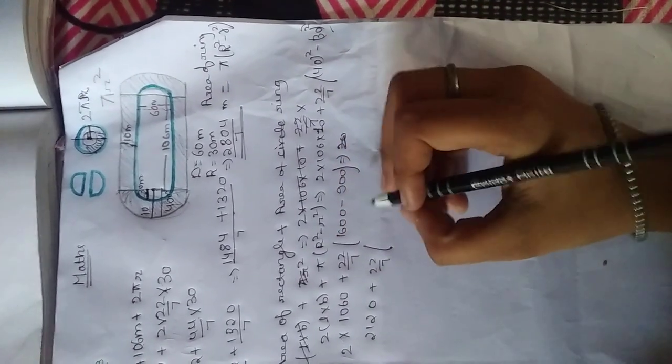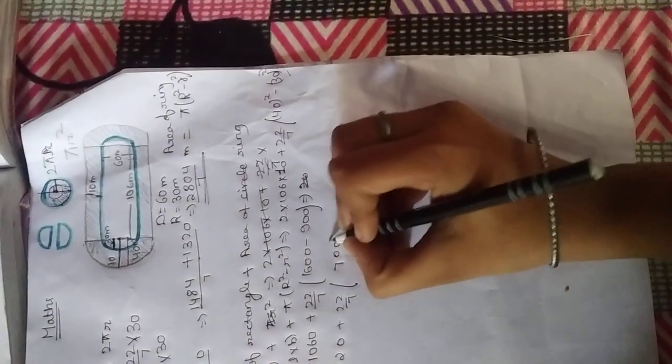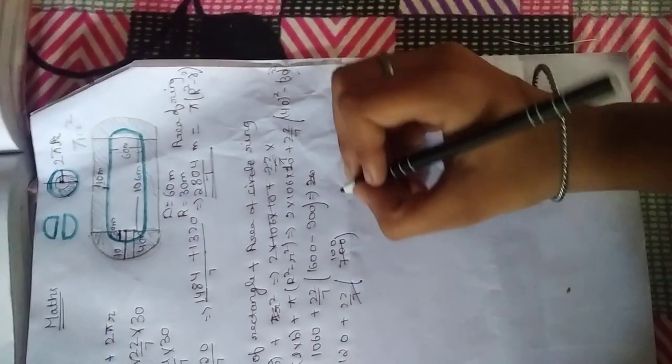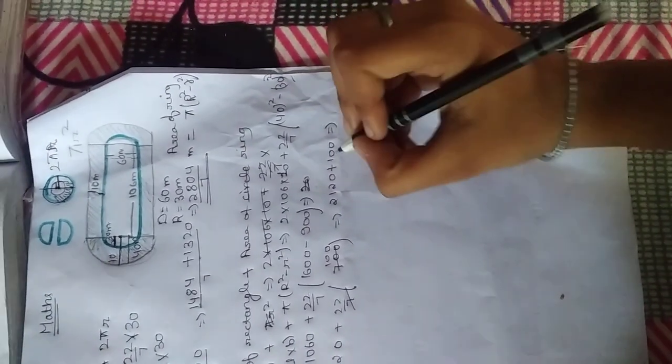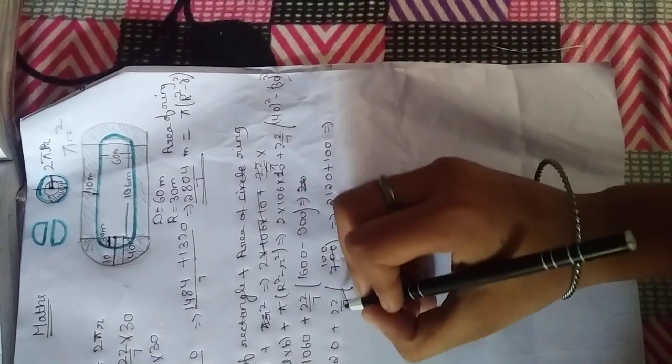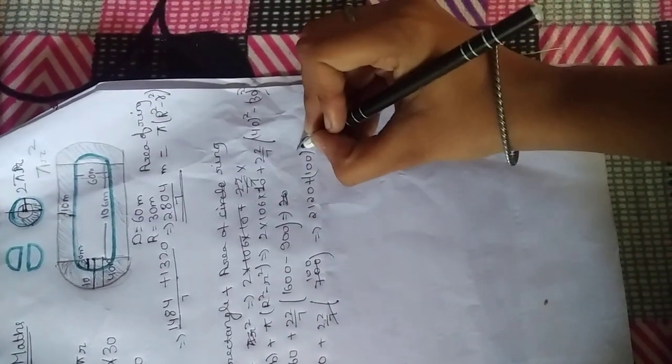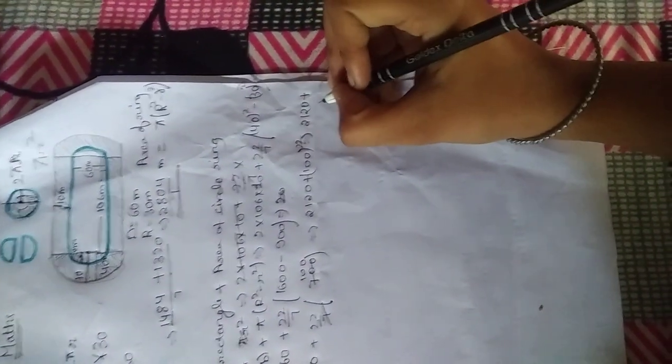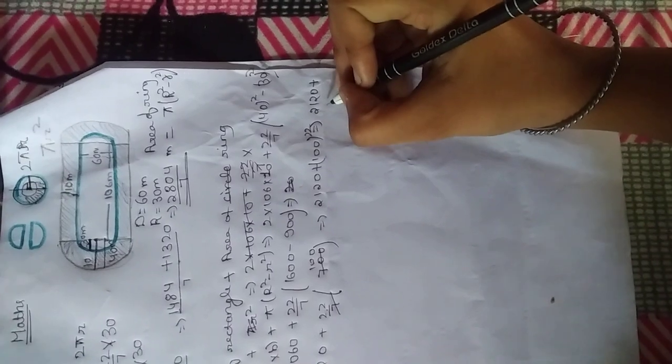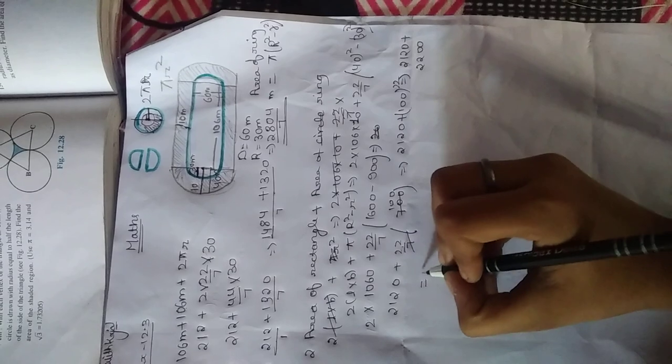This will be subtracted. What number comes? 700, and 7 will be cut down, 100 into 22. So the value is 2120 plus 2200 equals to... So see, this is the answer.